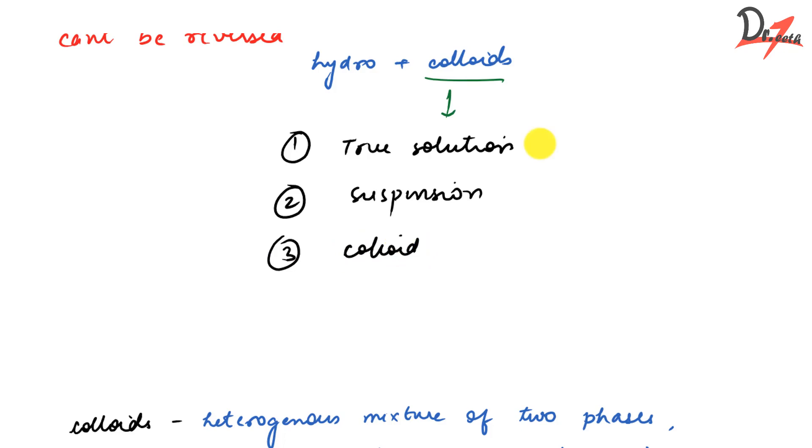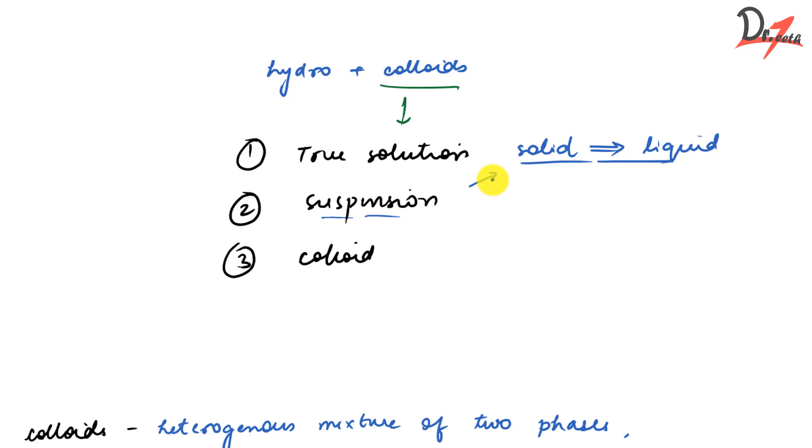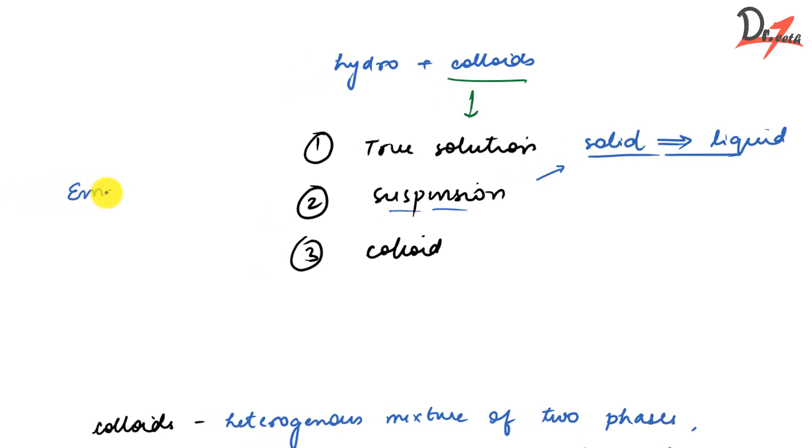Now a true solution is one in that we have a homogenous mixture means the solid will completely dissolve in the liquid and you cannot differentiate. You cannot find out or have that solid particles in the liquid. But in suspension, we have the particles dispersed in the liquid. They can be seen. They are larger than 10 raised to minus 4 centimeter. And you can even see them by the naked eye or through a microscope. So that is a suspension.